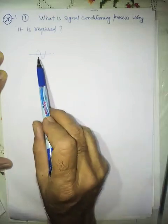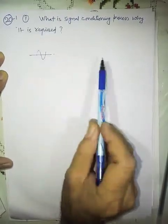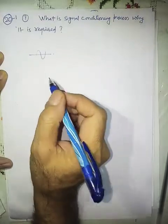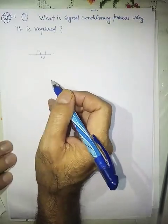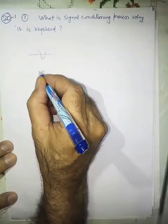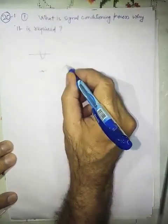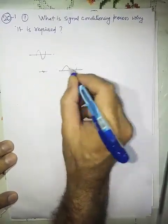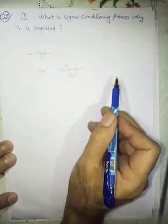So we condition the signal so that this can be handled easily. Now there are many methods of conditioning the signal. If the signal is very weak from some sensor, we amplify this signal in such a way that the waveform is maintained and this is amplified, then this is conveyed.